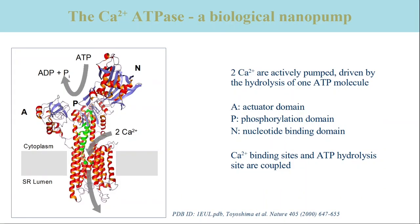The object of the study is the nanopump calcium ATPase, which pumps two calcium ions at the expense of the hydrolysis of one ATP molecule. The calcium ATPase has a maximum extension of about 100 angstroms and consists of a single subunit composed of 1000 amino acids. It has 10 transmembrane helices in the transmembrane part and 3 cytoplasmic domains: the actuator domain A, the phosphorylation domain P, and the nucleotide binding domain N.